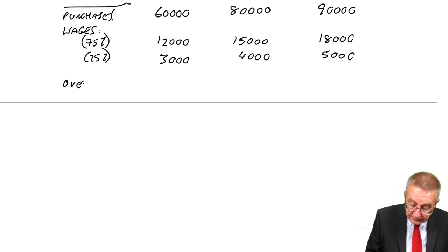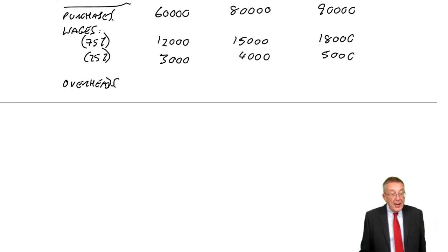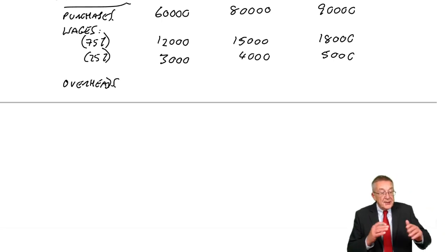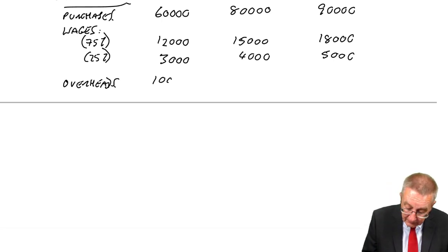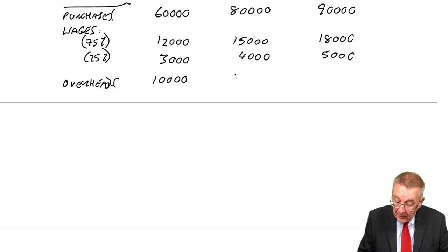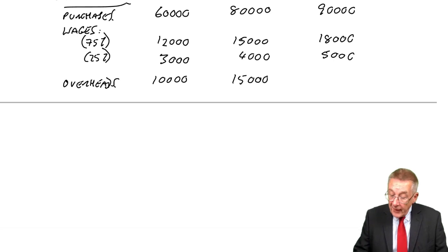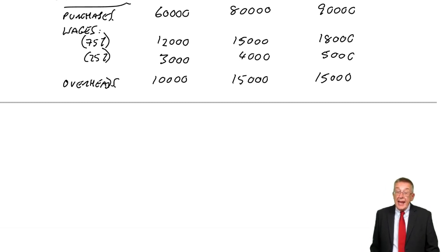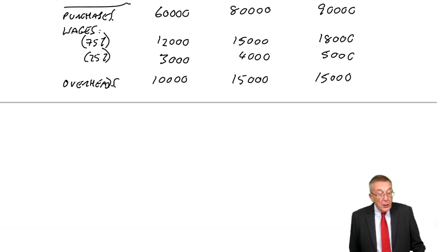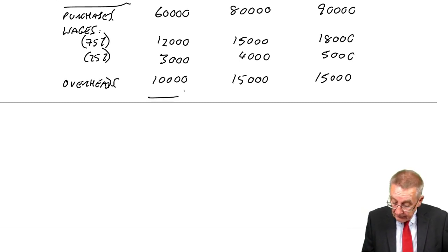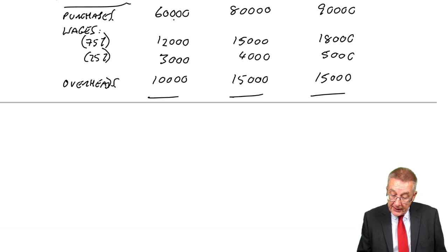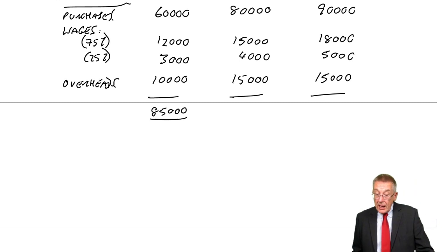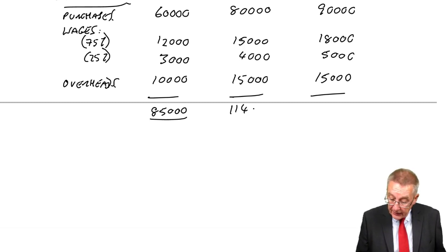Overheads are paid the month after they're incurred. So December's overhead is paid in January. January's overhead is paid in February. February's overhead is paid in March. March's overhead is paid in April. So total payments are: January 85,000, February 114,000, March 128,000.